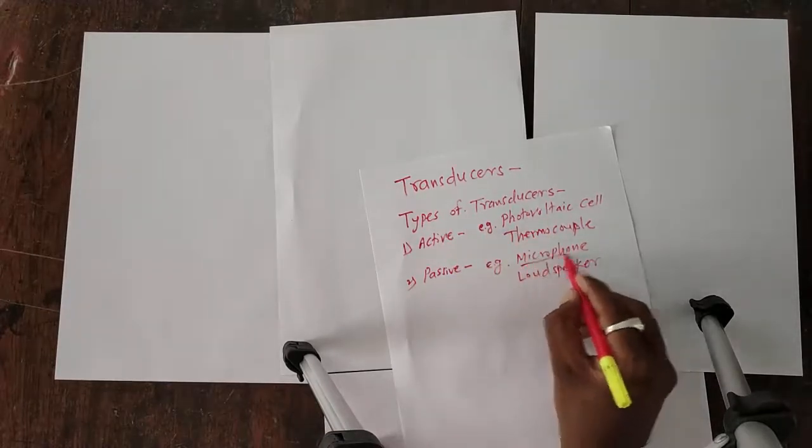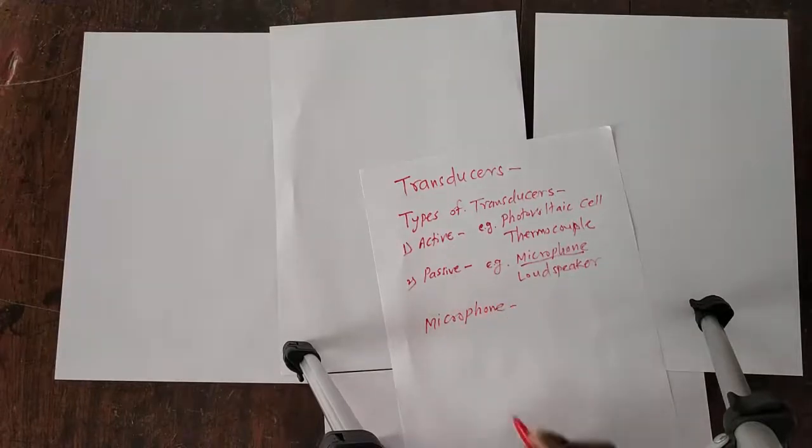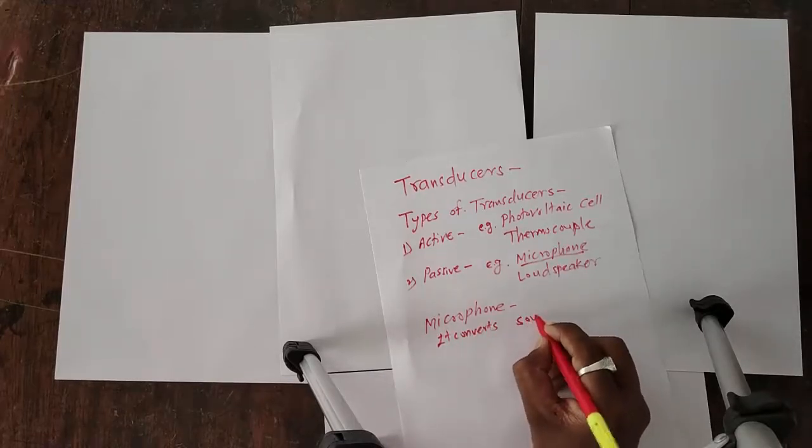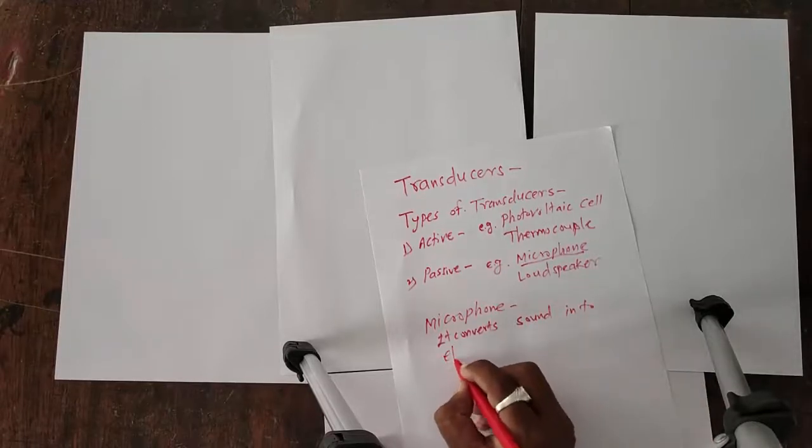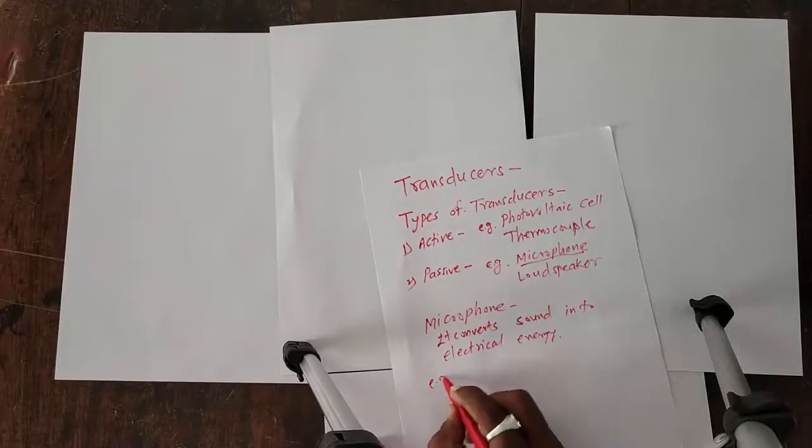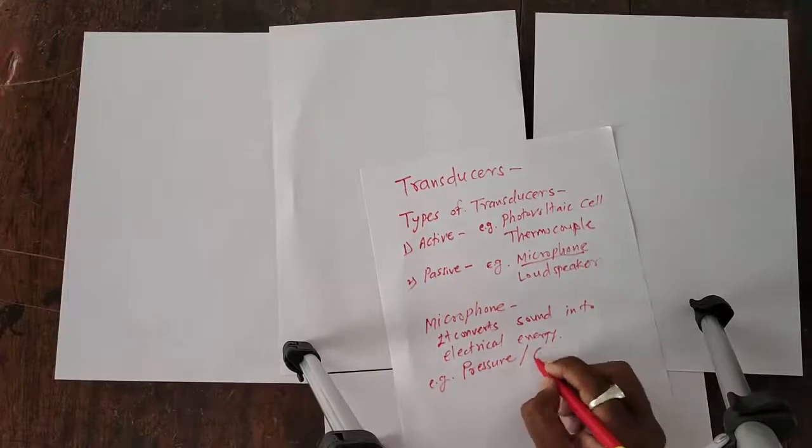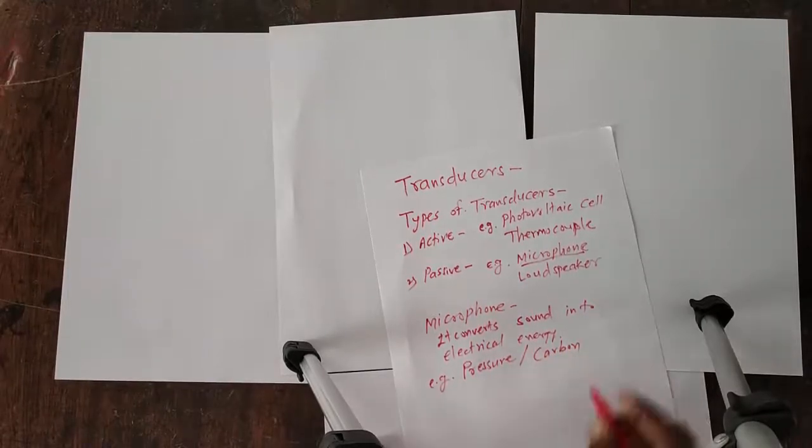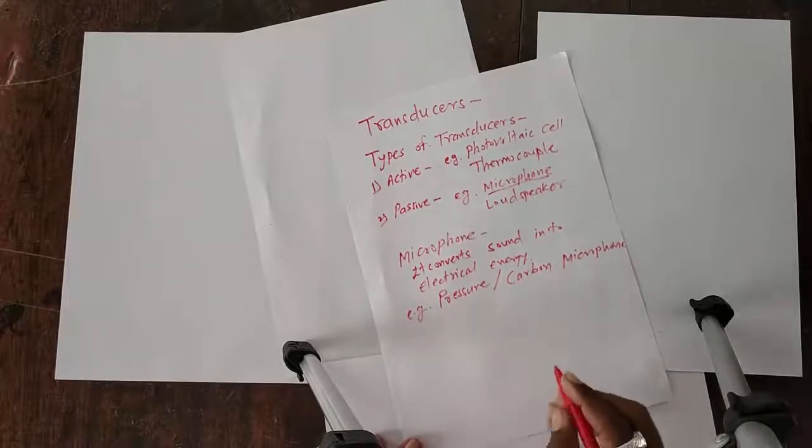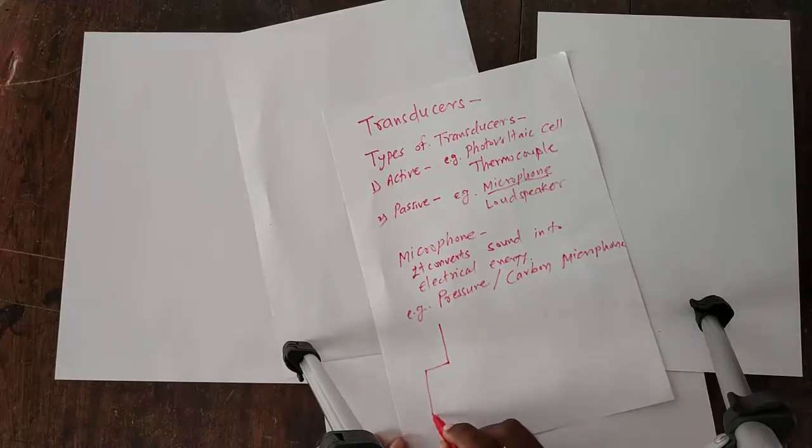Now, we are discussing a microphone in details. The microphone converts sound energy into electrical energy. For example, the pressure or carbon microphone is the example of microphone. In this pressure microphone or carbon microphone, the carbon granules are used for dielectric material. Now, we draw a diagram of carbon microphone.